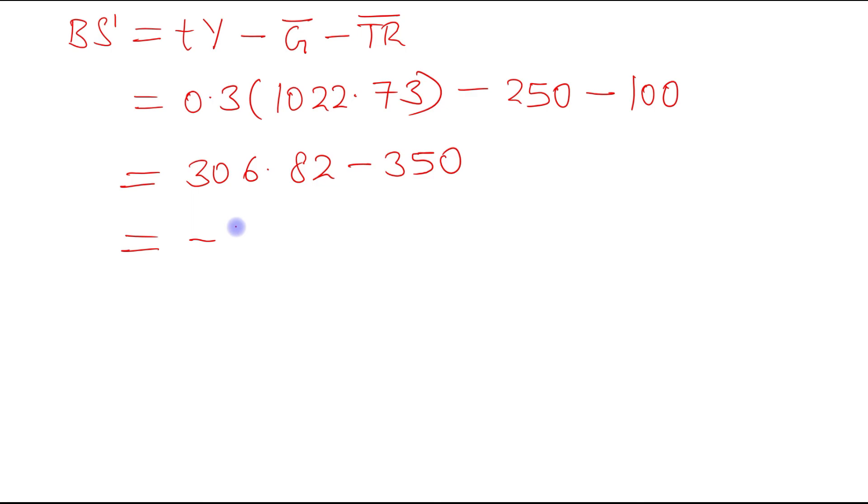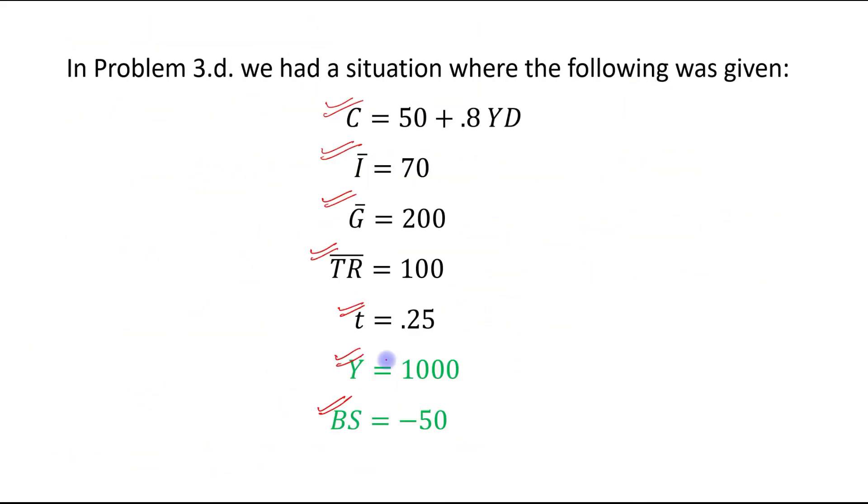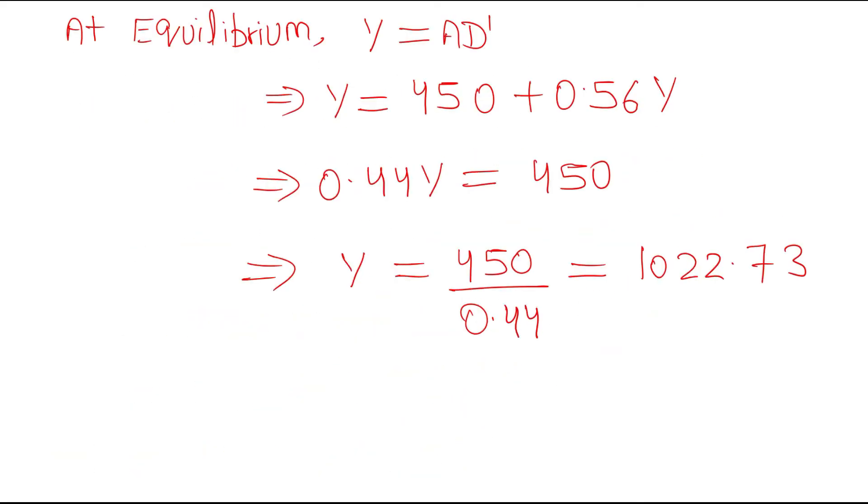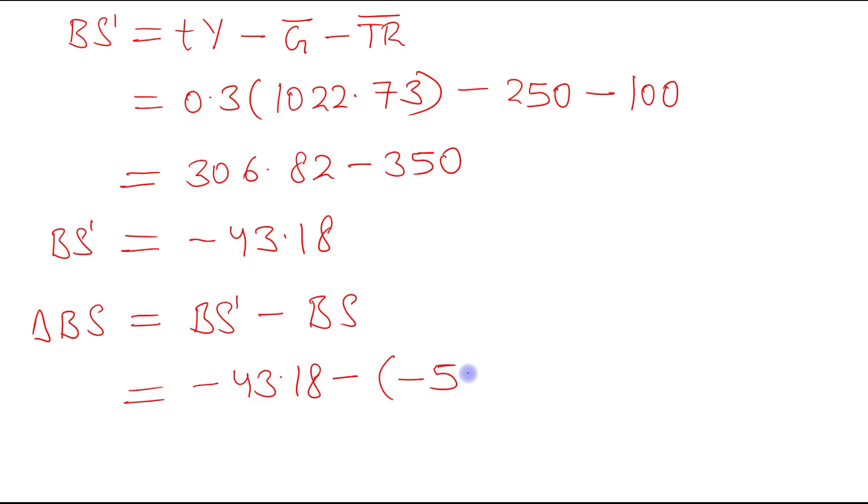This equals -43.18. This is BS dash, the budget surplus. Now we will calculate change in budget surplus, which will be BS dash = -43.18 minus when the economy was operating at equilibrium level of income 1000, at that time budget surplus was -50, so -43.18 minus -50 equals +6.82.